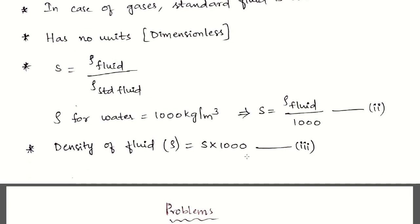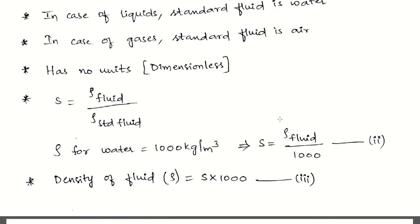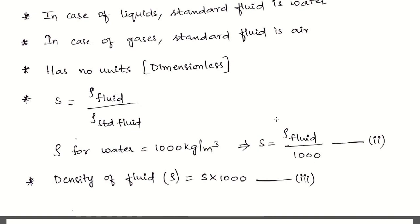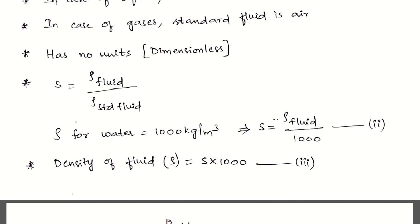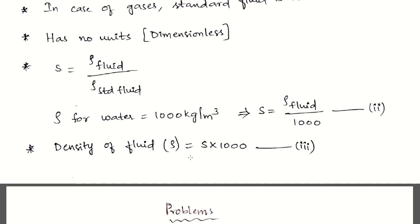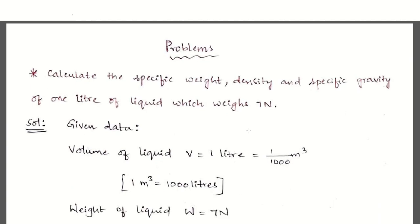Which formula to use depends on the given input and required output. For example, if specific gravity of an oil is 0.9 and you need its density, use density = S × 1000 = 0.9 × 1000 = 900 kg/m³. You must be aware of all formulas so you can adapt to whatever the question provides.